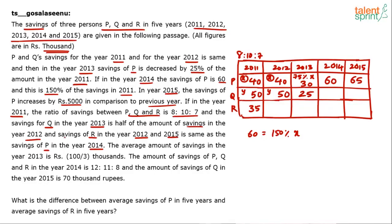R's savings in 2012 and 2015 are the same as P's savings in 2014, which is 60. So R's savings in 2012 = 60 and R's savings in 2015 = 60. Also, the average savings across all three persons in 2013 is 100/3 thousand, meaning the total for 2013 = 100. P is 30, Q is 25, that's 55, so R in 2013 must be 45.